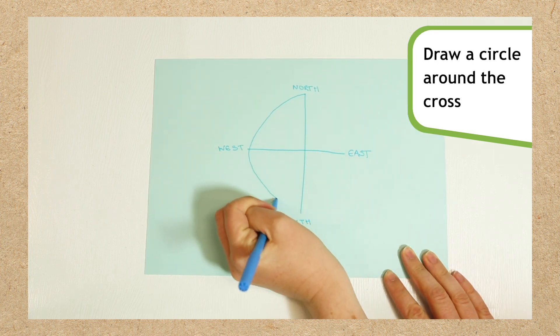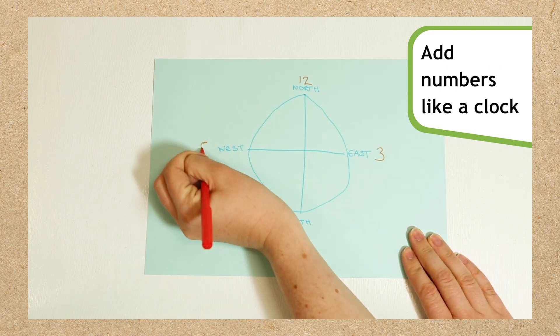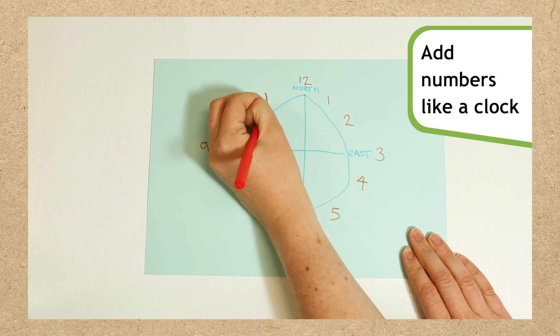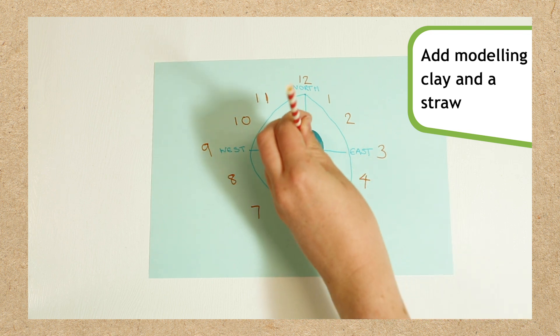Next draw a big circle around your cross. Add in numbers around your circle like a clock, with number 12 being at the top. Place some modelling clay in the middle of the cross and stick your straw in it.